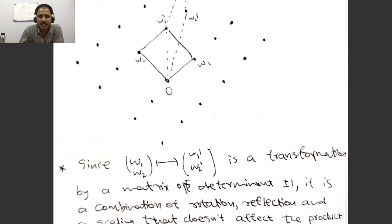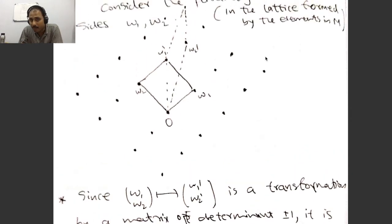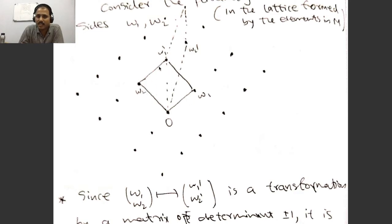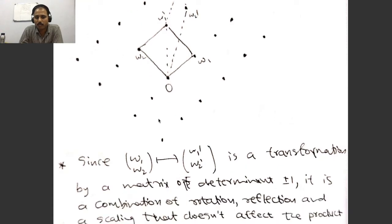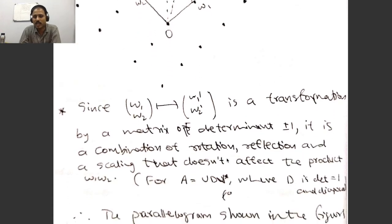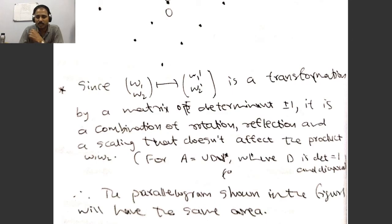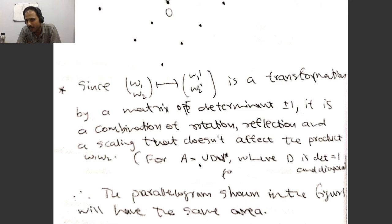Geometrically, if you consider the parallelogram in the lattice formed by elements of M, with sides ω₁ and ω₂, it has the same area as the parallelogram with sides ω₁' and ω₂'. This is because the unimodular transformation, via singular value decomposition, is a combination of rotation, reflection, and scaling by a diagonal matrix with determinant one, so the area is preserved.